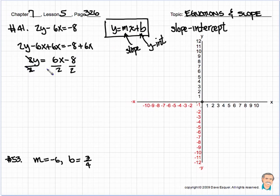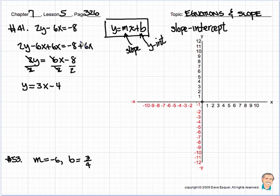We can cancel out the 2's. This is going to give us a 3, and that's going to give us a 4. So our new equation, just manipulating, looks like y is equal to 3x minus 4. Again, added 6x to both sides. 2y is equal to 6x minus 8. I divided both sides by 2. y is equal to 3x minus 4. Sure looks like that slope-intercept form.